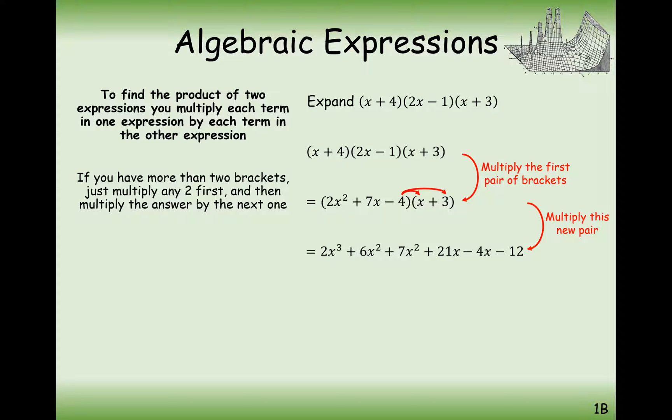Simplify all that you can here. So remember, you're just keeping together all the same powers of x here. So the x squareds can simplify together, and all of the x terms can simplify together. So in this case, we're going to simplify our answer to 2x cubed plus 13x squared plus 17x minus 12.